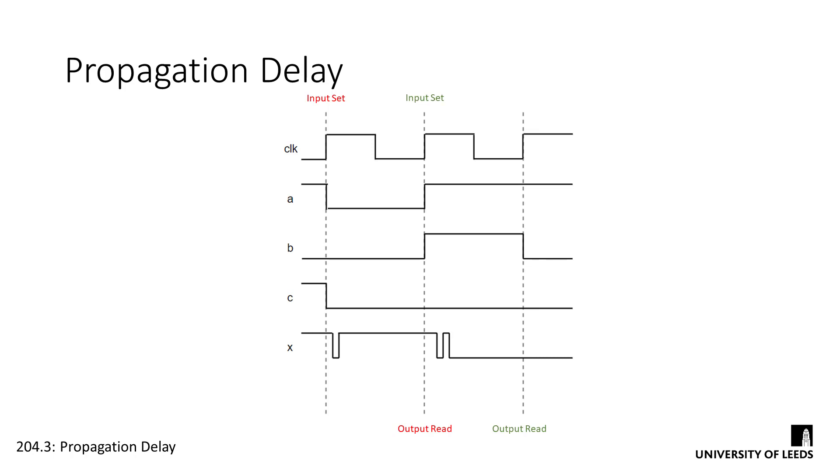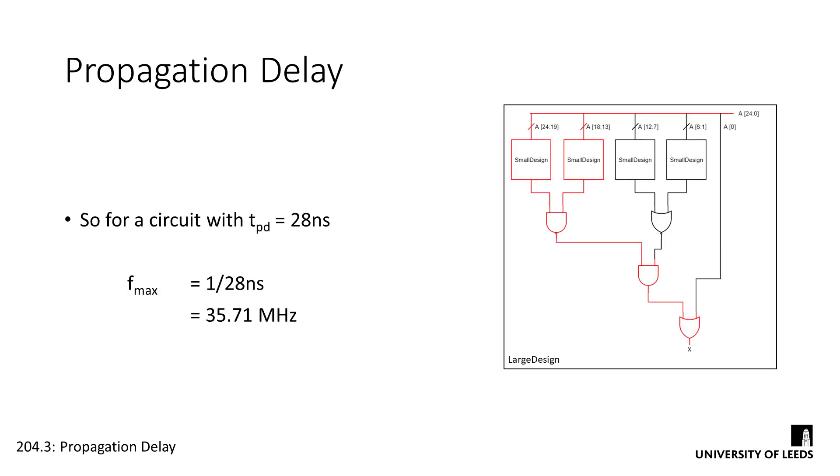Therefore, the output of the design must be stable before the next tick of the clock. Thus, the minimum clock time period is equal to the propagation delay, and in turn, the maximum clock frequency is equal to 1 over it. So for our circuit, with its critical path of 28 ns, it can operate at a frequency of 35.71 MHz.